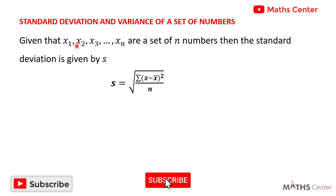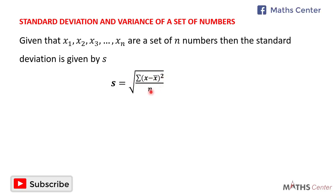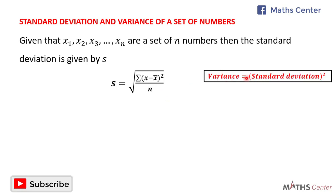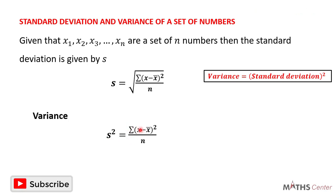Given that x1, x2, x3 up to xn are a set of n numbers, the standard deviation is equal to the square root of sigma (x minus the mean of x) squared, divided by n, where n is the number of numbers. The variance of a distribution is equal to the standard deviation squared. So if the standard deviation is x, the variance will be x squared — that is, sigma (x minus the mean of x) squared divided by n.